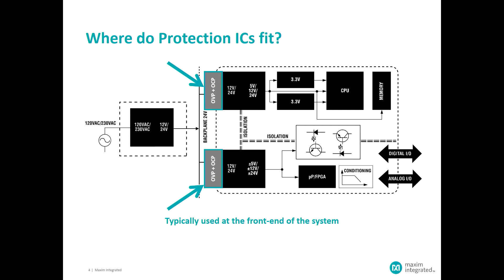In larger systems, you would have a main central power supply that takes the line power and generates a distribution voltage — oftentimes around 24 volts or maybe 48 volts — and distributes that to various circuit cards. Each card has its portion of the system and needs some protection between that distribution bus and the rest of the circuit. This is important because faults in a system card could drag down the distribution bus, or faults in the main power line could impact the performance of circuitry on the system cards.